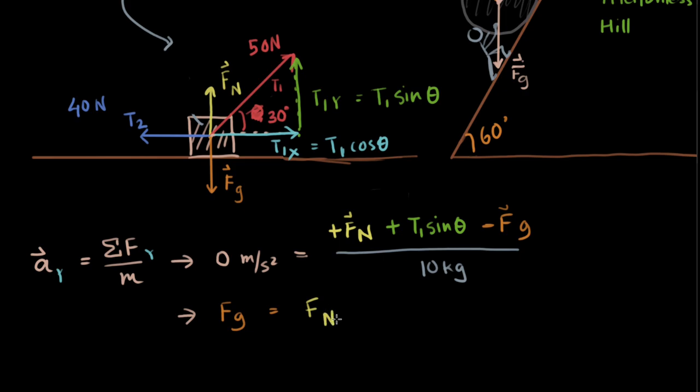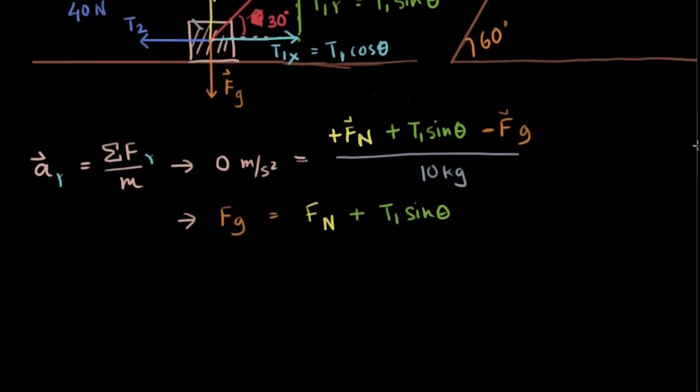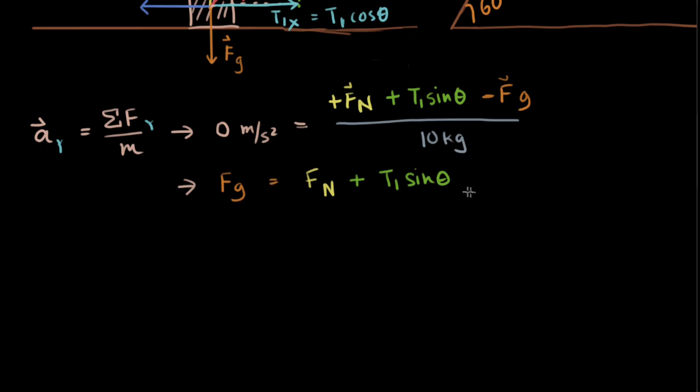FN, that is the normal force, and T1 sine theta. We want to find the normal force. We know the force of gravity equals mg, that will just equal m times g. For convenience let us take g to be 10 meter per second squared.